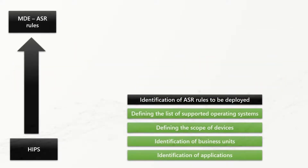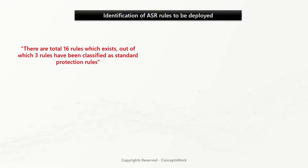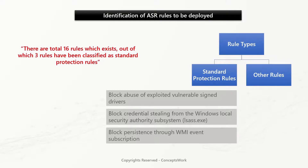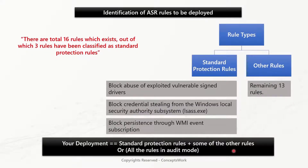The next step is to identify the set of rules you want to deploy. There are currently 16 attack surface reduction rules available. Three of them are known as standard protection rules because implementing them has minimal impact on user productivity. Your deployment should ideally contain a combination of standard protection rules plus others you want to enable. If you are testing ASR behavior, my recommendation is to enable all rules in audit mode.